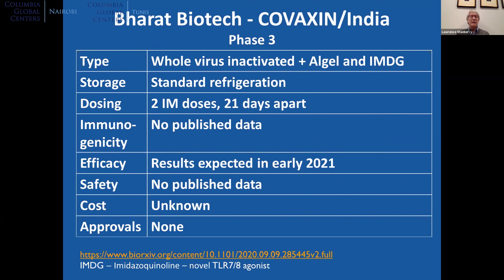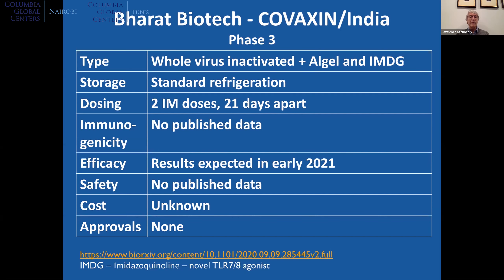There is also an Indian whole-inactivated vaccine that has added a potent TLR agonist to significantly enhance immune responses — the only such strategy in phase three development. It requires standard refrigeration and two doses three weeks apart. Currently there is no data on immunogenicity or safety, with efficacy data expected in 2021. Given India's strength in vaccine manufacturing and the use of standard refrigeration, this could be a very promising and affordable option.